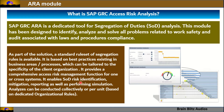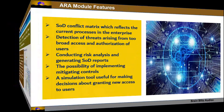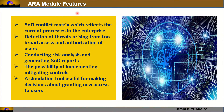The ARA module enables SOD risk identification, mitigation, reporting, and simulation. Analyses can be conducted collectively or per unit based on dedicated organizational rules. Its features include a segregation of duties conflict matrix reflecting current enterprise processes, detection of threats from broad access and user authorization, conducting risk analysis and generating SOD reports, the possibility of implementing mitigating controls, and a simulation tool useful for making decisions about granting new access to users.